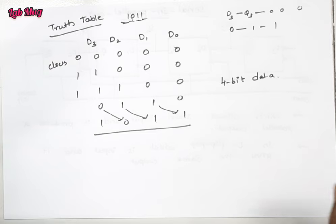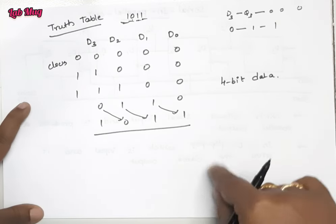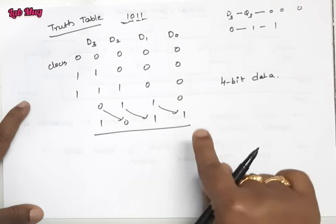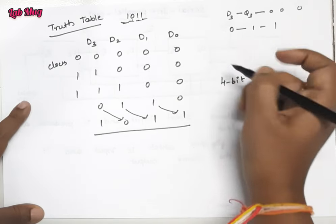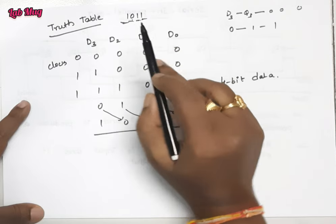This is the serial in parallel out. The difference between the previous case and this case is there we had serial output, but here with 1011 there is no problem anywhere.